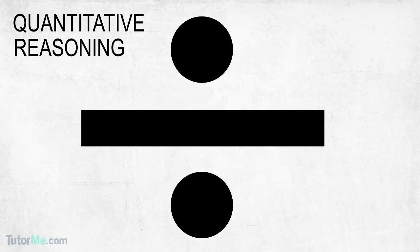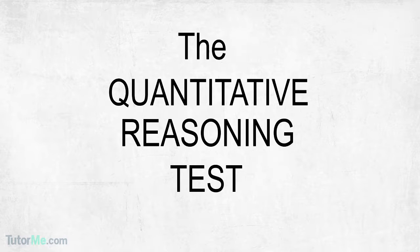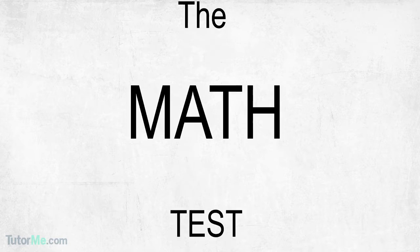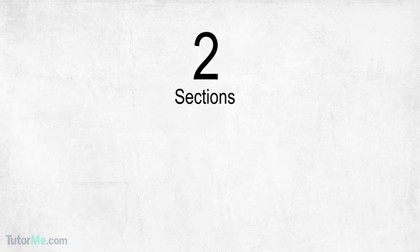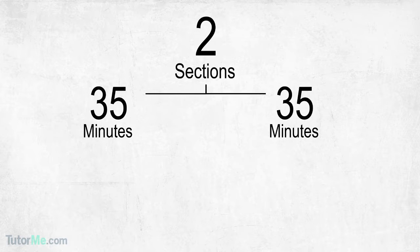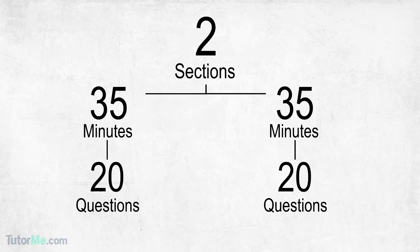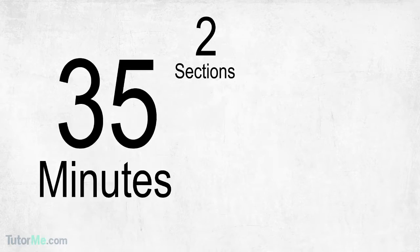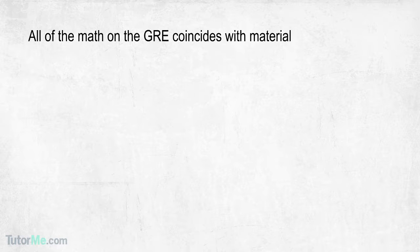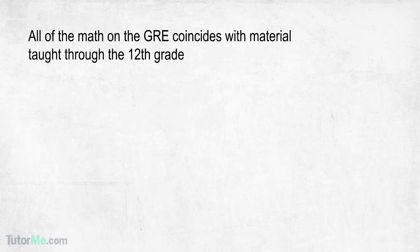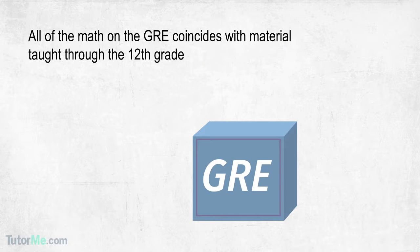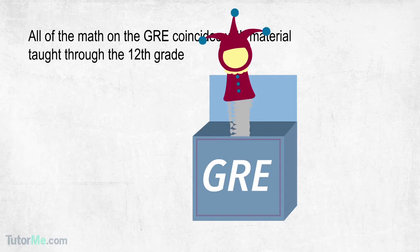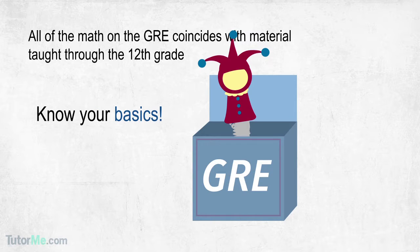Welcome to the Quantitative Reasoning Test, which is a fancy way of saying the math test. There are two math sections, each 35 minutes long and each containing about 20 questions. The questions can appear in any order. Don't be overwhelmed by the material. All the math on the GRE coincides with material taught through 12th grade curriculum, so there won't be any surprises. Know your basics and you will be fine.